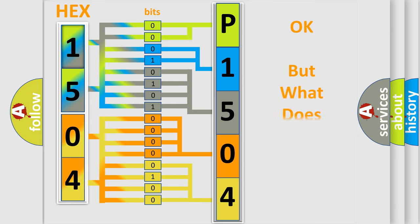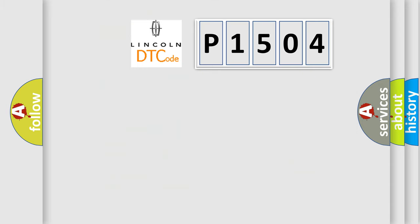We now know in what way the diagnostic tool translates the received information into a more comprehensible format. The number itself does not make sense to us if we cannot assign information about what it actually expresses. So, what does the diagnostic trouble code P1504 interpret specifically for Lincoln car manufacturers?